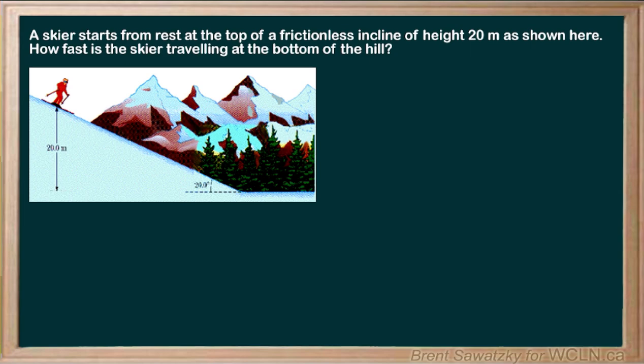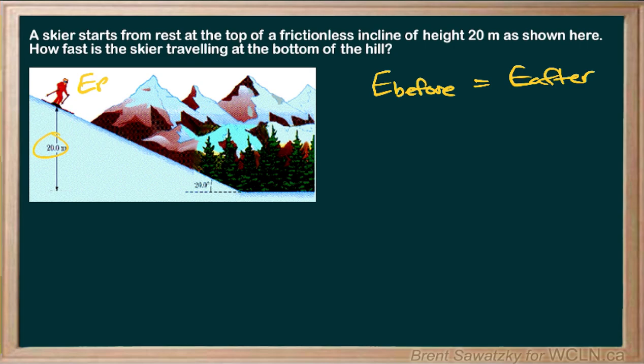In other words, the height — they're just dropping 20 meters. Let's give this a try and show the advantages of that. We start off with E before equals E after. In the before situation, we try and determine what's involved before. Certainly there's potential energy because we've got this height involved. For kinetic energy — from the picture, it could be that they were already going, but the question says starts from rest. So the kinetic energy at the beginning is zero.